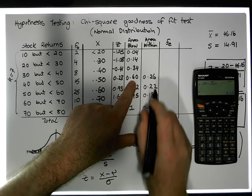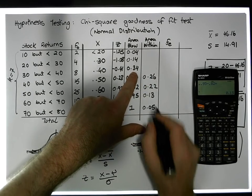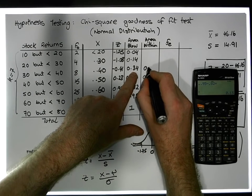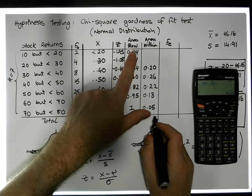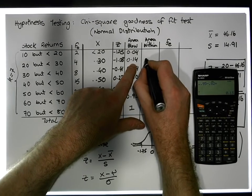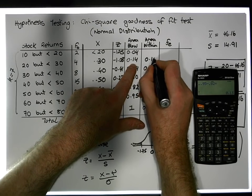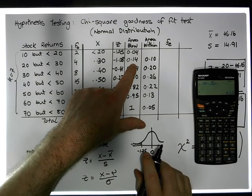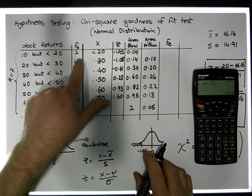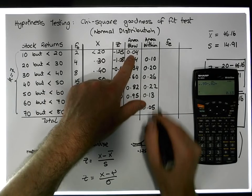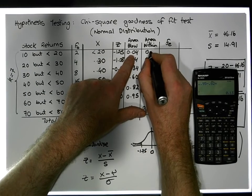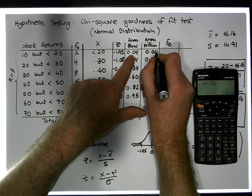The area inside the next interval is 0.20. The area inside the following interval is 0.10. And the area in the interval less than 20 is 0.004.